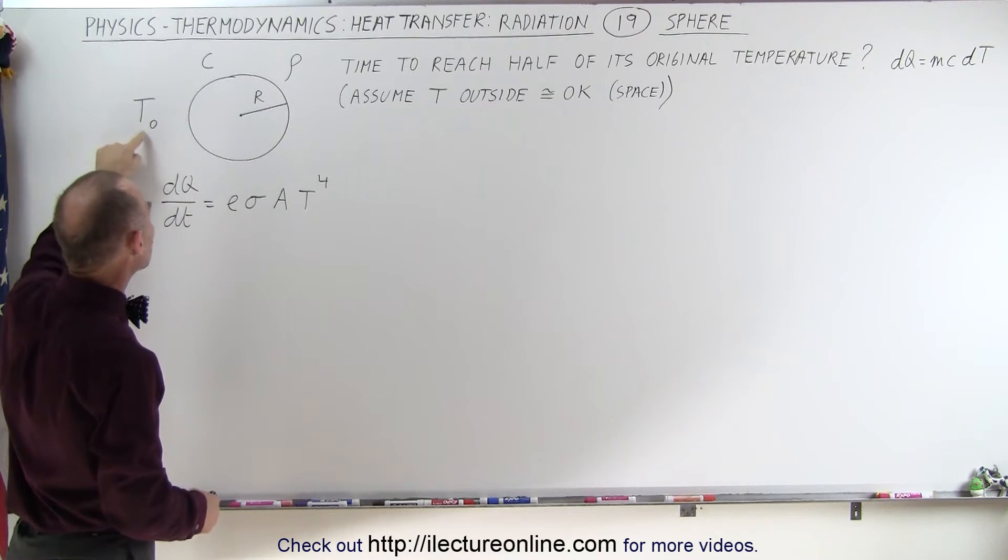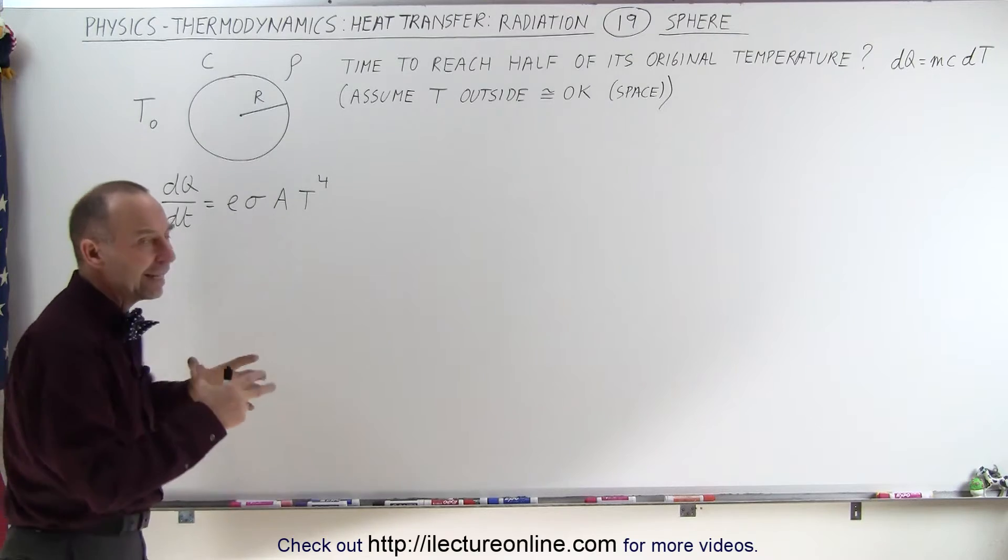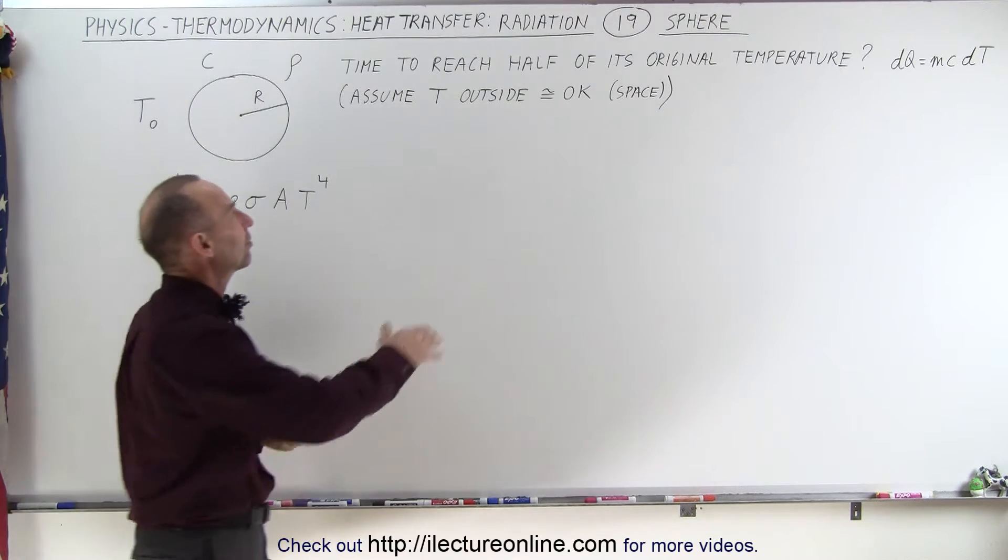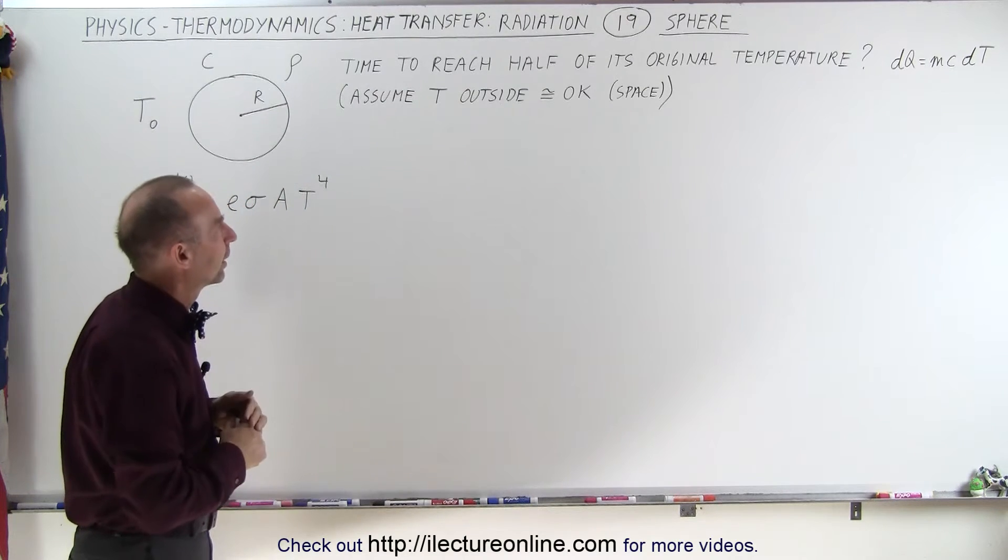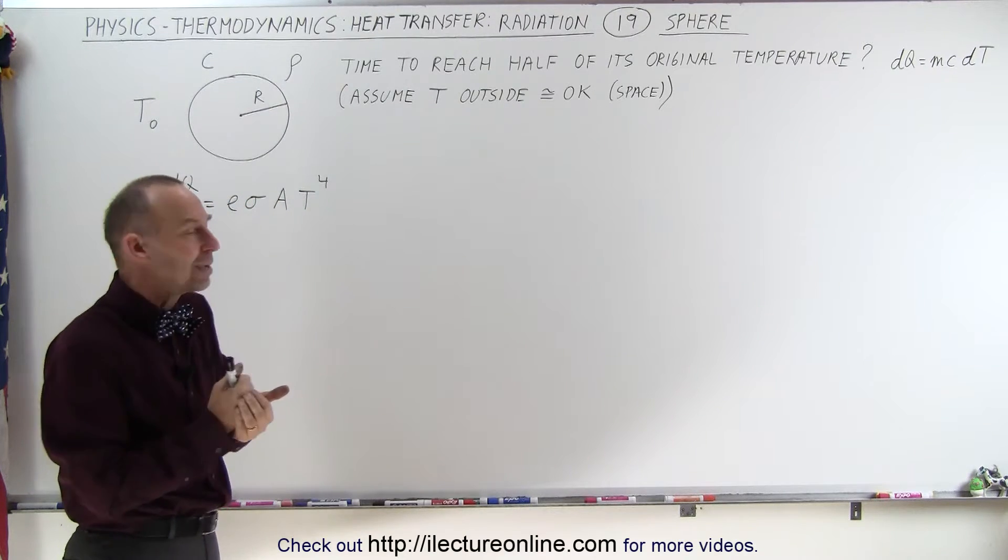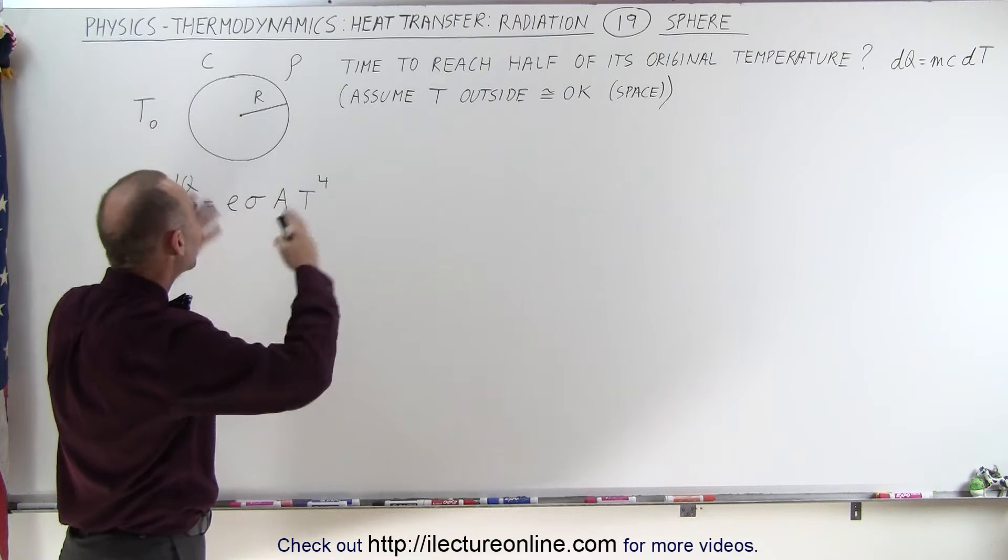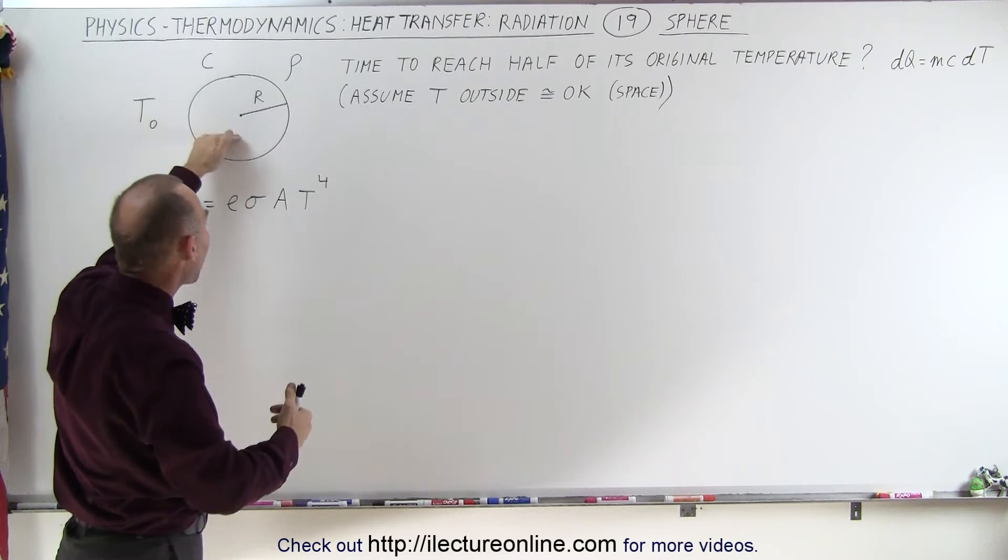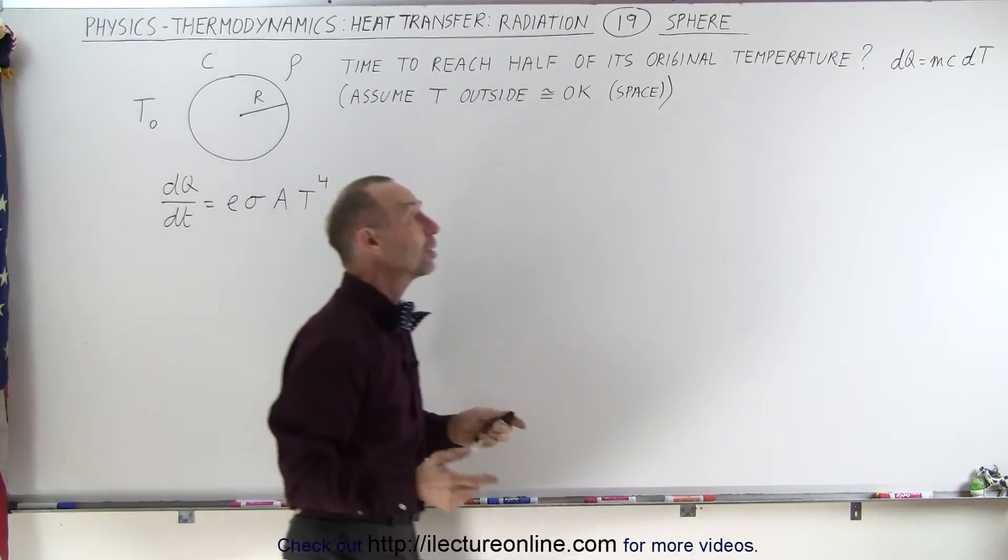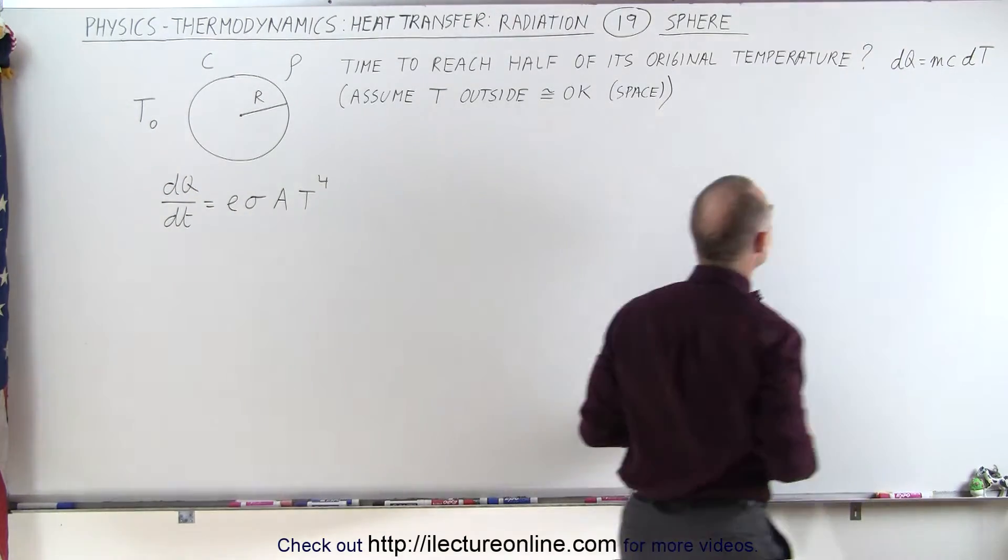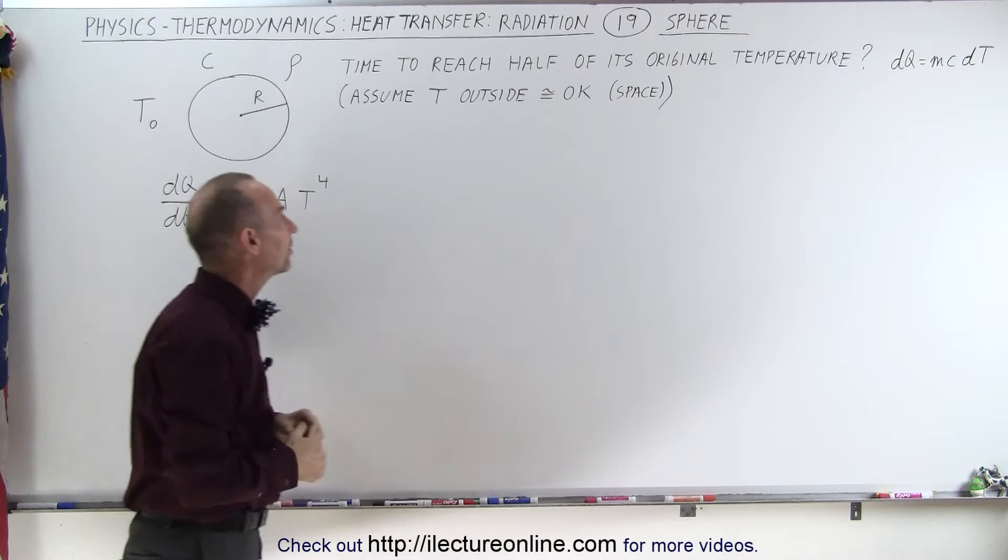It starts at some initial temperature T sub naught and it's radiating heat into space, so we can assume that the temperature outside is near zero. We're trying to find the time for the sphere to reach half of its original temperature. We're going to need the equation dQ equals mc dT or delta T.